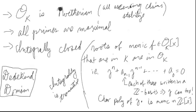We're also going to use the idea that OK is Noetherian — all ascending chains of ideals eventually stabilize — and also that OK is integrally closed.